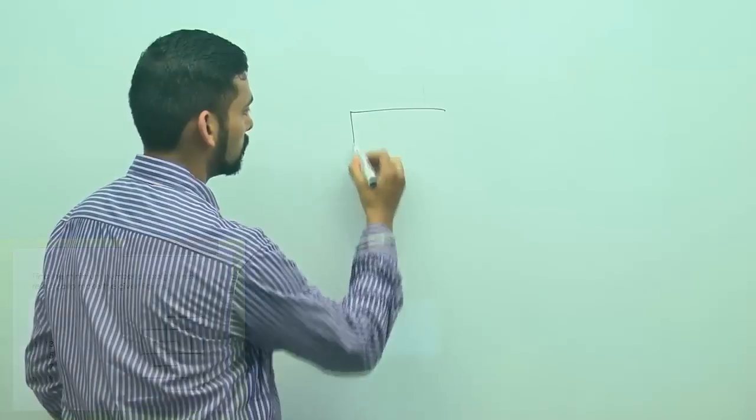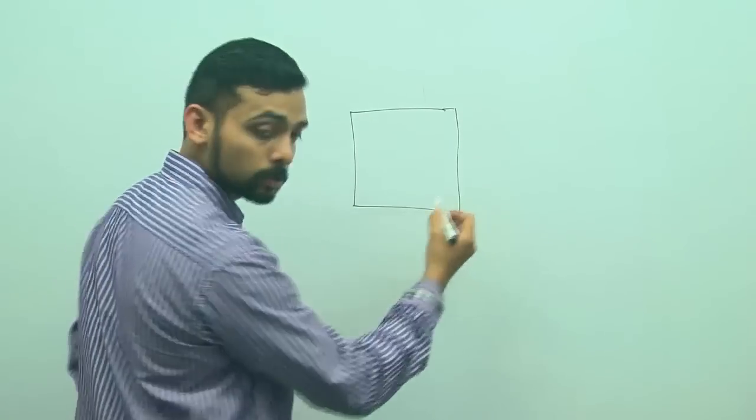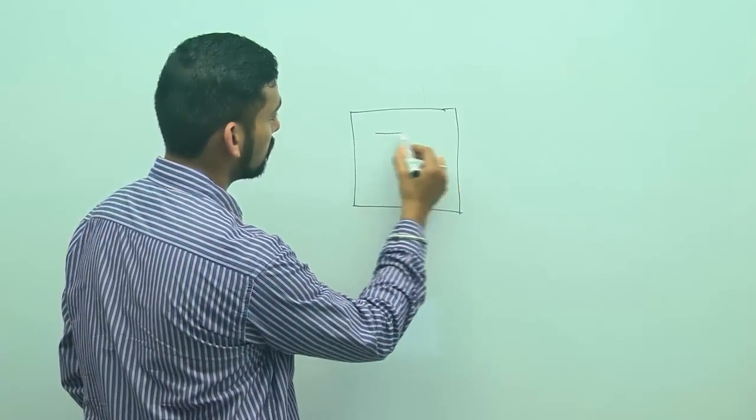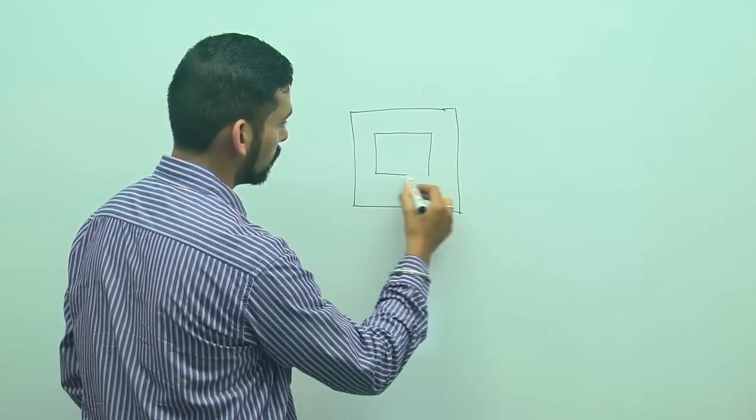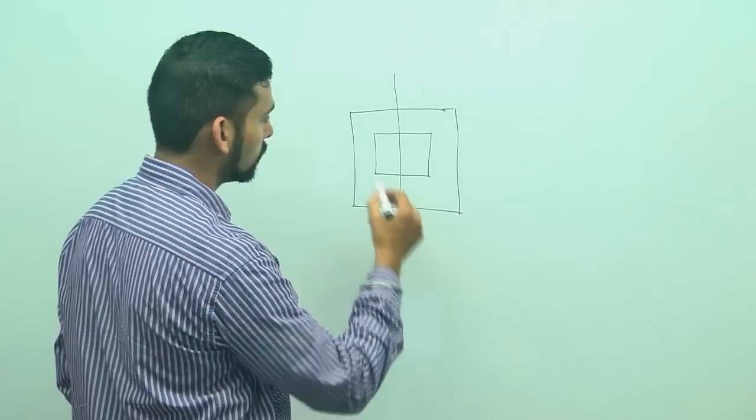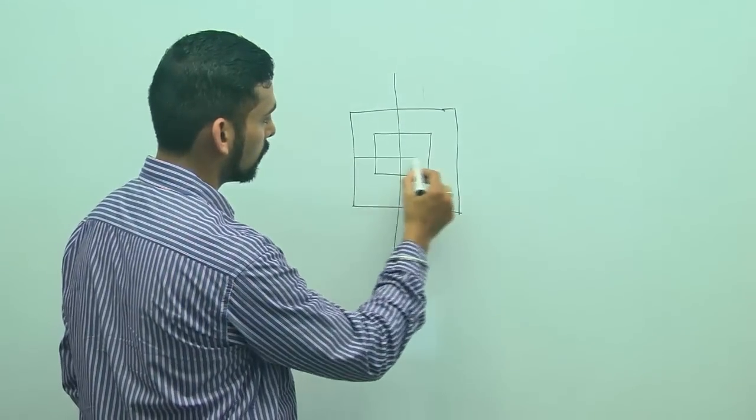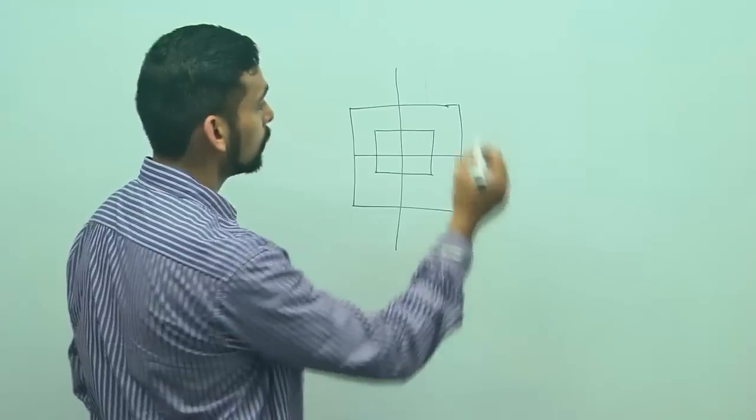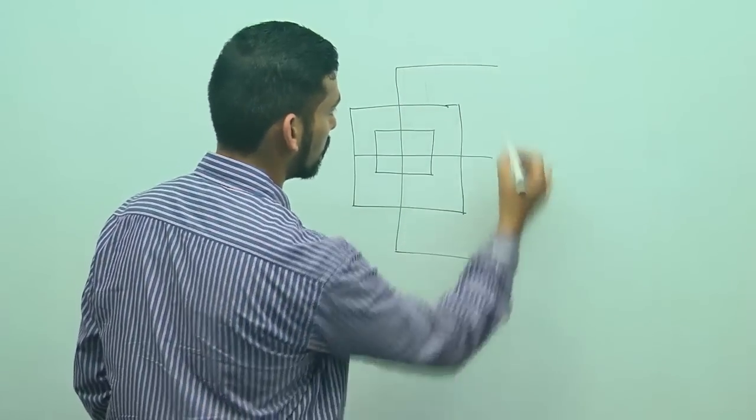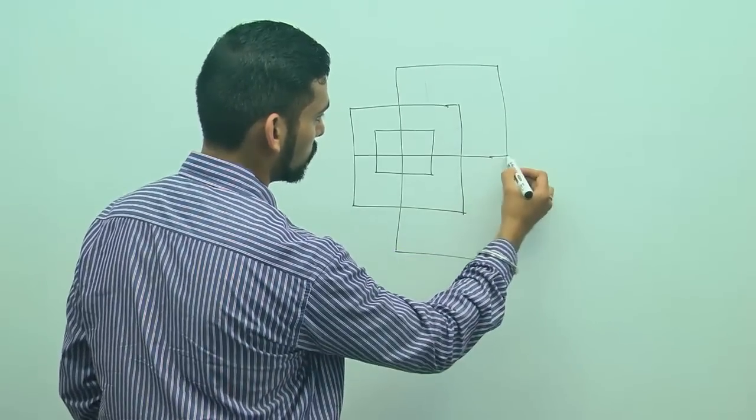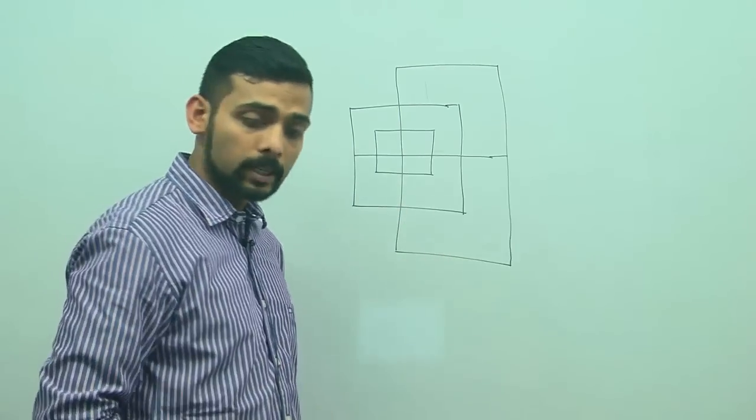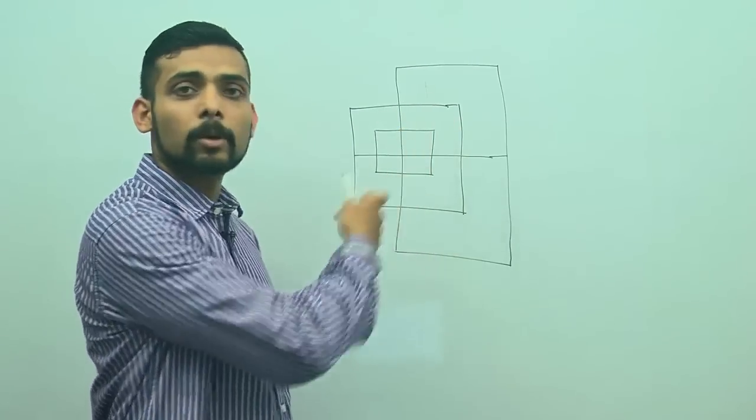So I have a square with me, this is a square. Inside the square is another smaller square. Now I will run a line through here and I will run a line like this and I am going to join these lines. This is the figure that we actually have in the question.